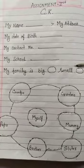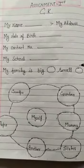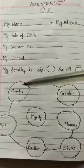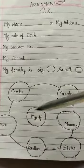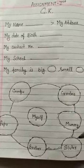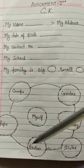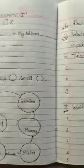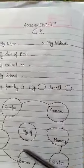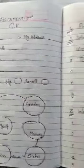My Family is Big or Small — tick करना है. Grandpa, Papa, Grandma, Myself, Mommy, Sister and Brother — paste the pictures. इन सबकी pictures paste करनी है.